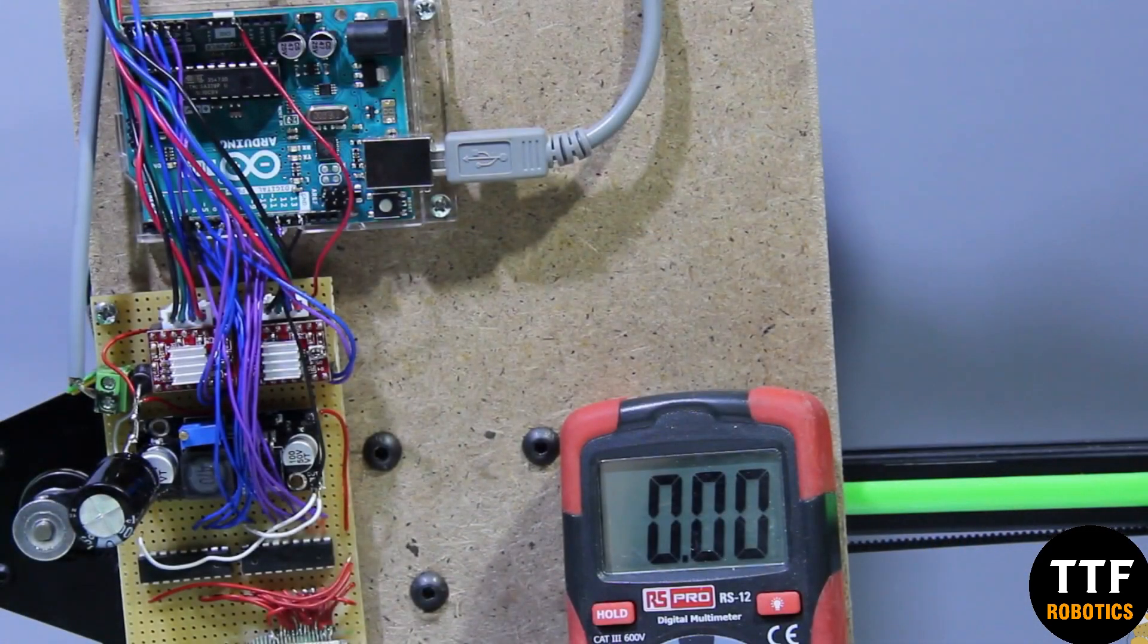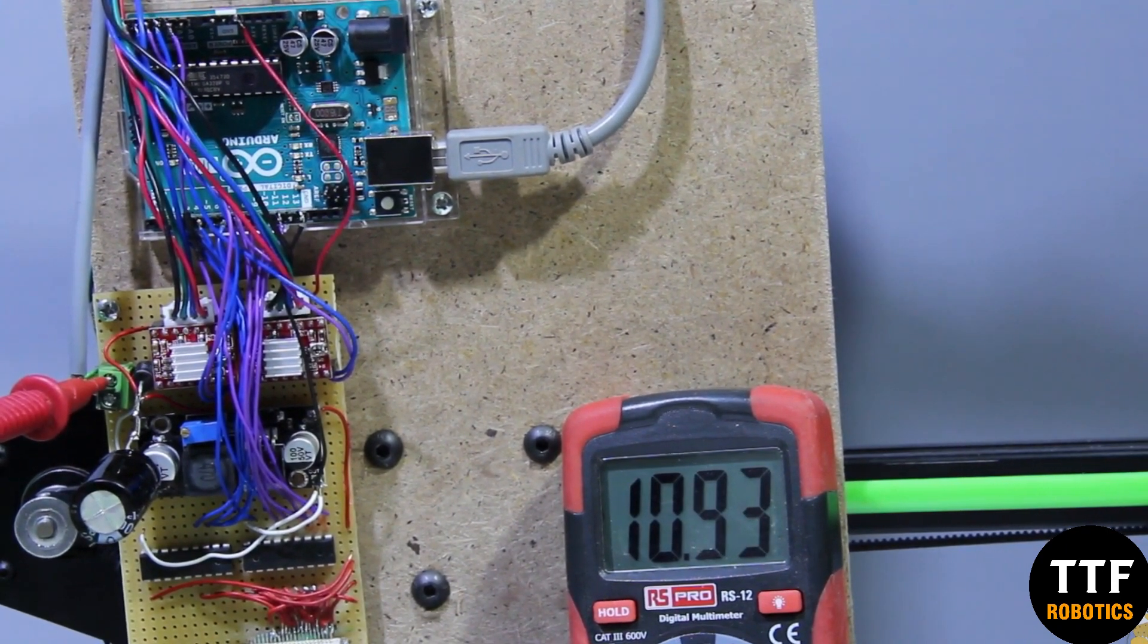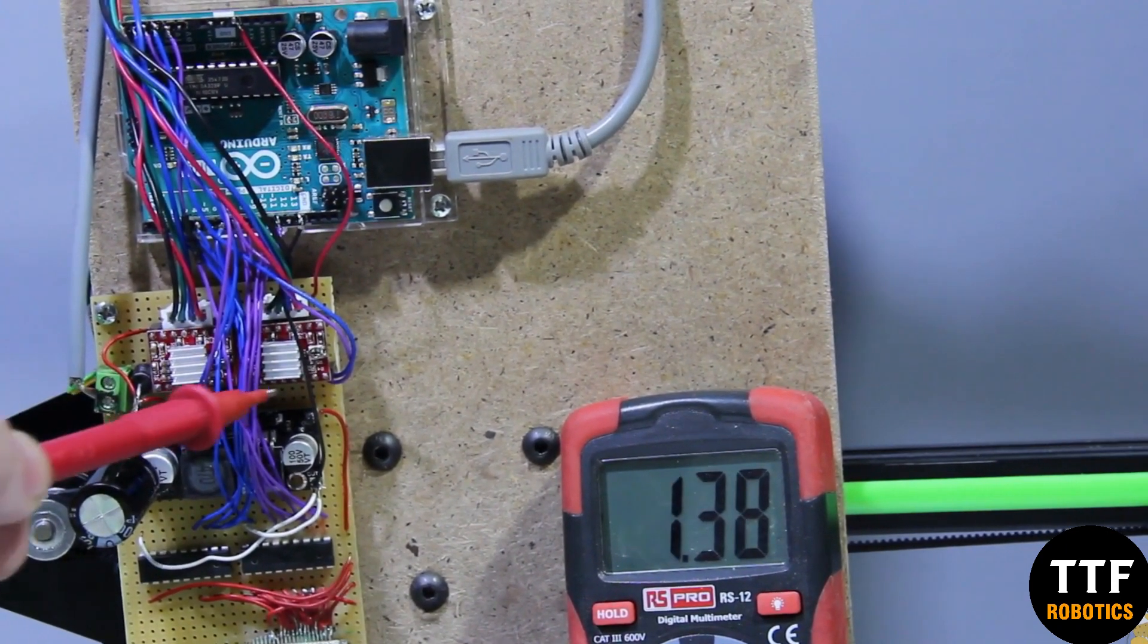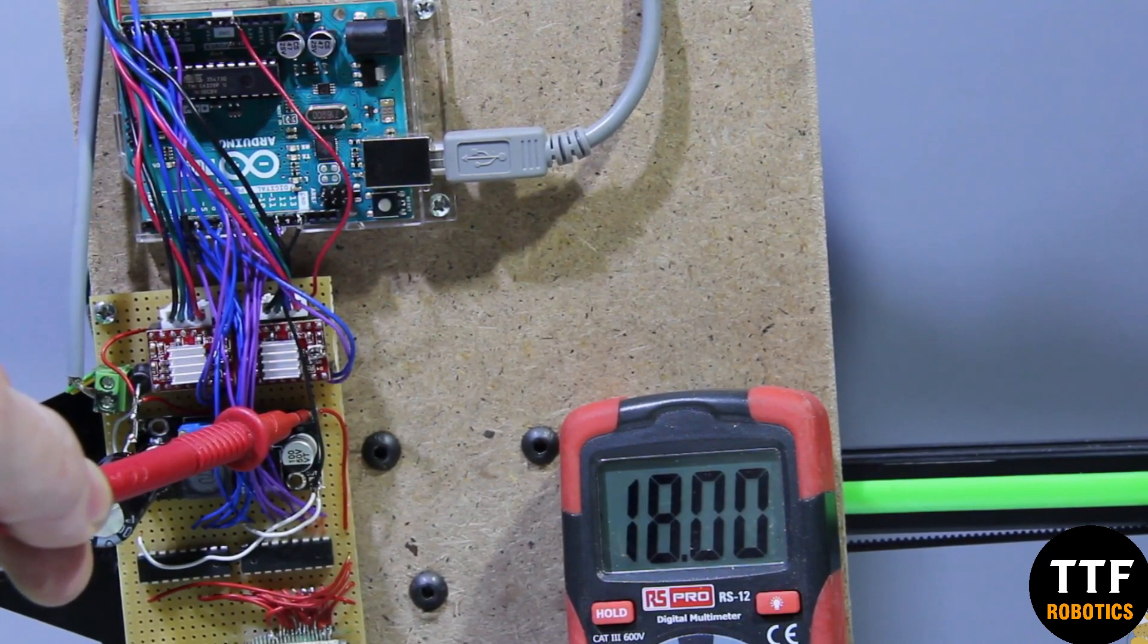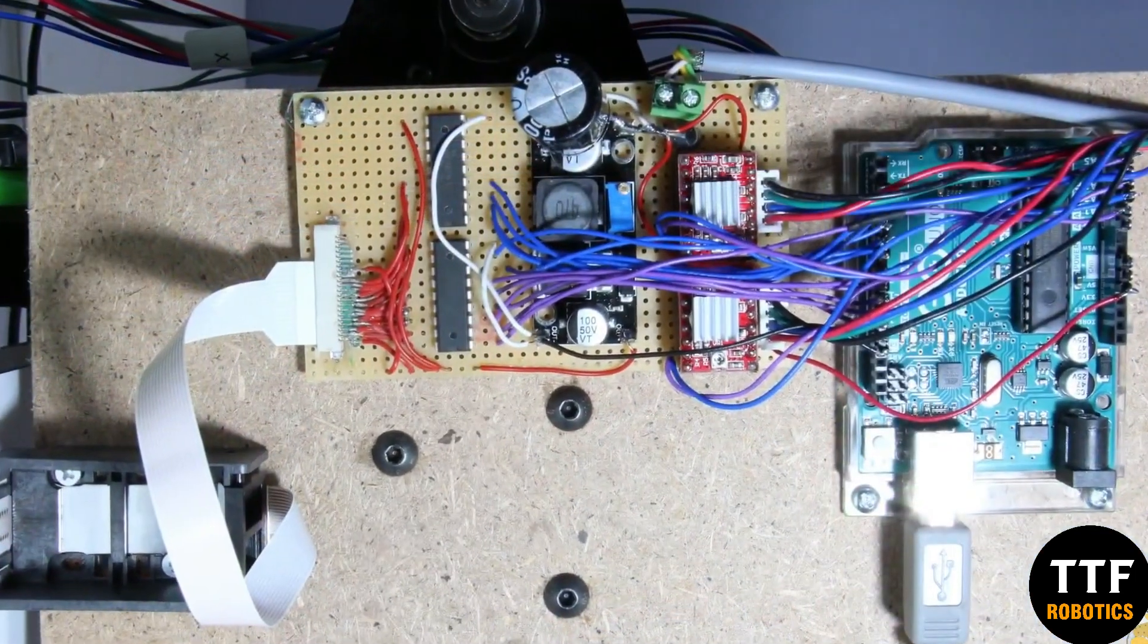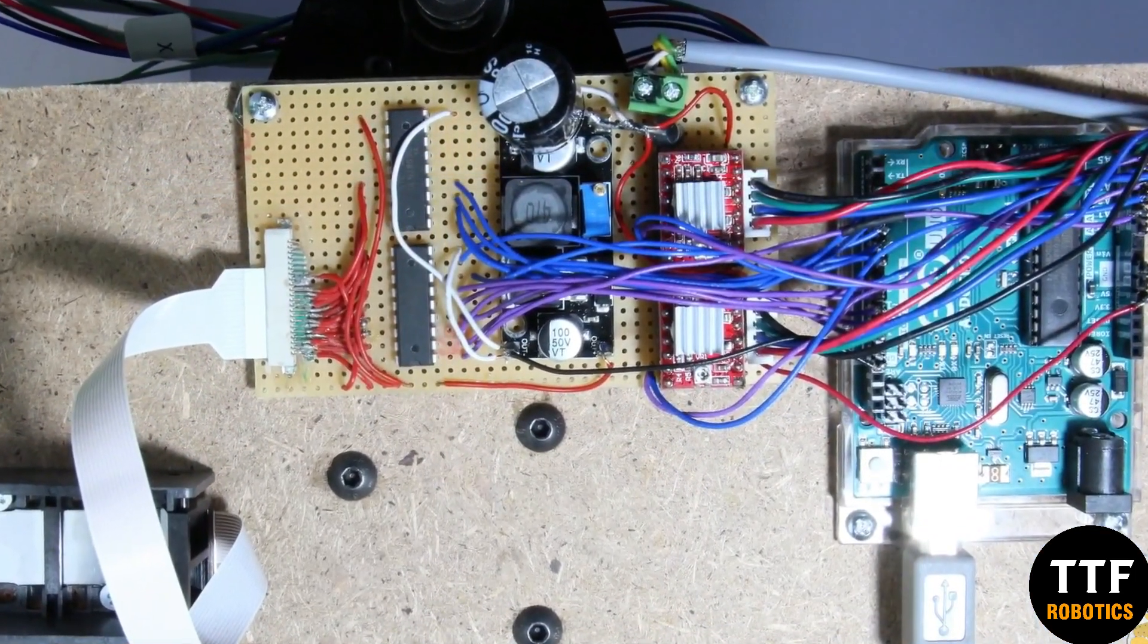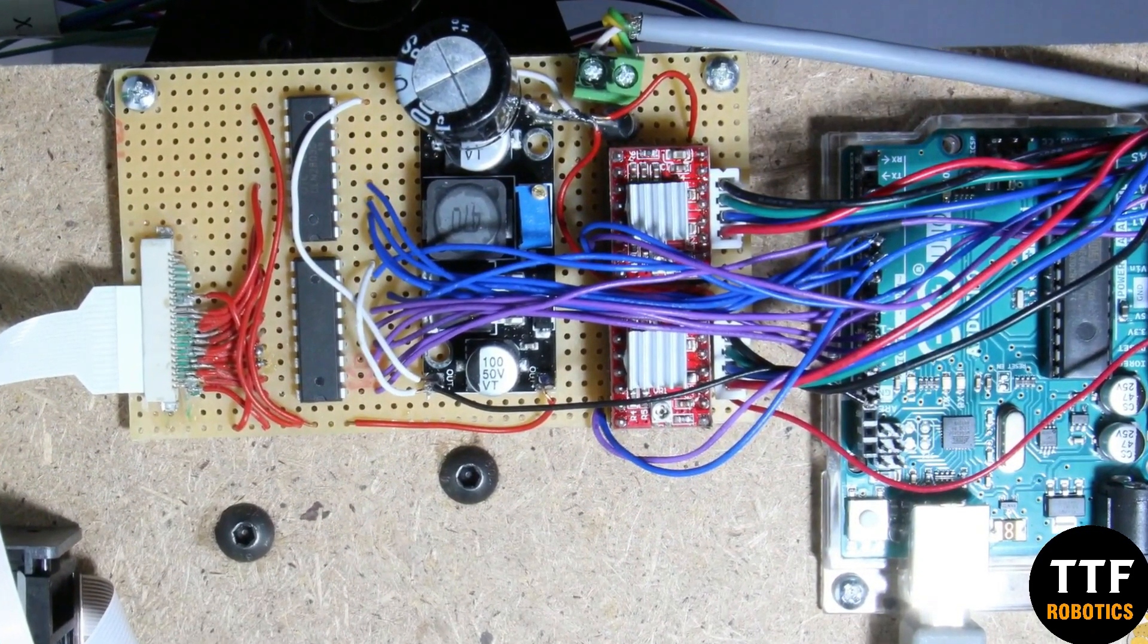According to the sources I found, which are linked in the description below, a pulse of 5 to 6 microseconds at 20 to 21 volts is required. I used the 12 volt line of a computer power supply as the voltage source. The 12 volts are raised via a boost converter to about 18 volts, which according to my experiments is sufficient to activate the nozzles.